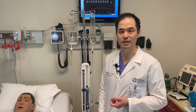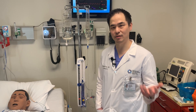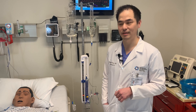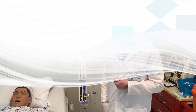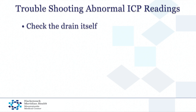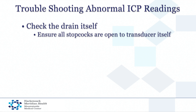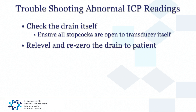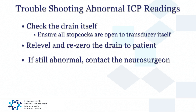When you encounter an abnormal reading from the transducer, the first steps are to check the drain itself, ensuring that all stopcocks are open to the transducer. Secondarily, it's important to re-level and re-zero the drain, ensuring that zero is matched with the patient's tragus and to undergo the zeroing procedure of the drain transducer. If all these maneuvers are performed correctly and the intracranial pressure is still reading an abnormal value, this is the point at which you would notify the physician.